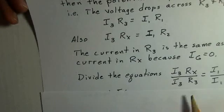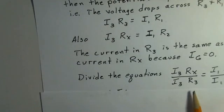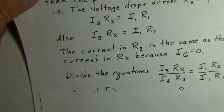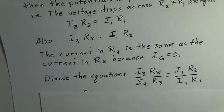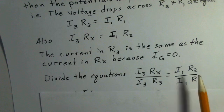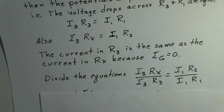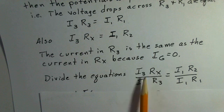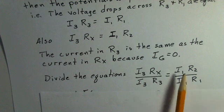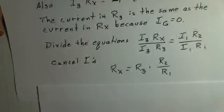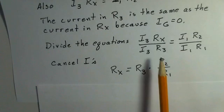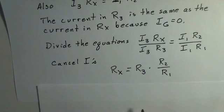And we have the ability to use our information that the currents are the same. The current in Rx is the same as the current in R3. The current in R2 is the same as the current in R1 on the bottom branch of the circuit. So our currents cancel. I3 cancels I3. I1 cancels I1. And we can solve for R sub X. Just multiply both sides by R3. The currents are gone. They've been canceled off.